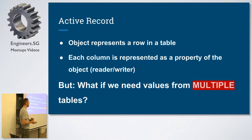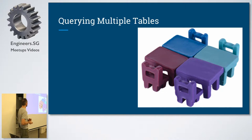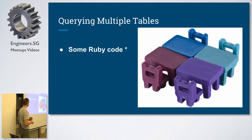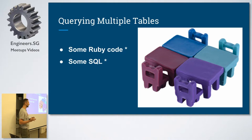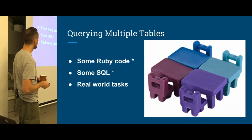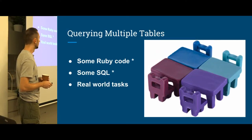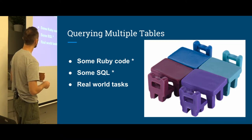But what if we need to get values from multiple tables? This is going to be the main highlight of this topic. What should we do if we're actually talking about selecting something from multiple tables instead of one? Can we use ORM for this? How can we use it, and in which cases is it a good idea or not? We're going to be querying multiple tables and doing some Ruby coding. The code is very simple — it has to be simple for the sake of presentation. We'll do some SQL, but this is not a SQL talk, and I'm definitely not a SQL expert.